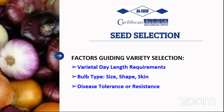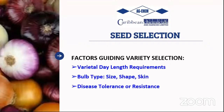Key factors in seed selection include varietal day-length suitability, size, shape, and skin color for target markets — whether white, yellow, red, or purple onion — and disease resistance or tolerance, which is especially important during periods of extreme rainfall or heat when fungal pathogens infiltrate the crop.